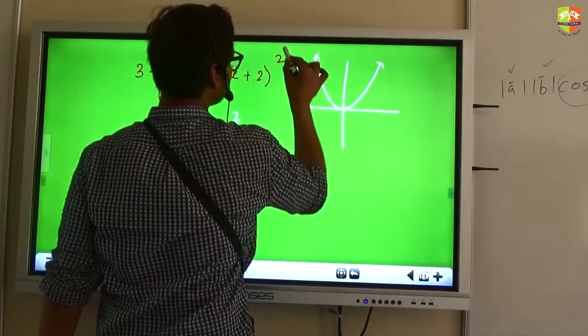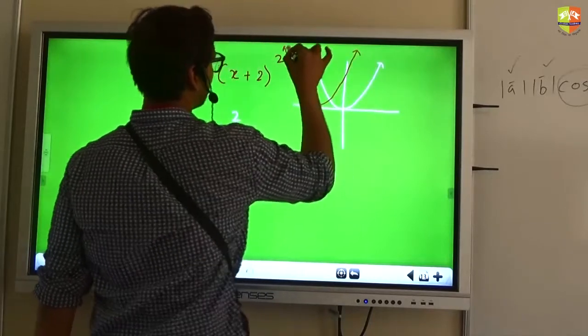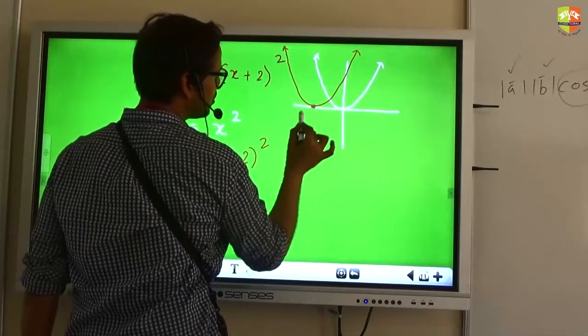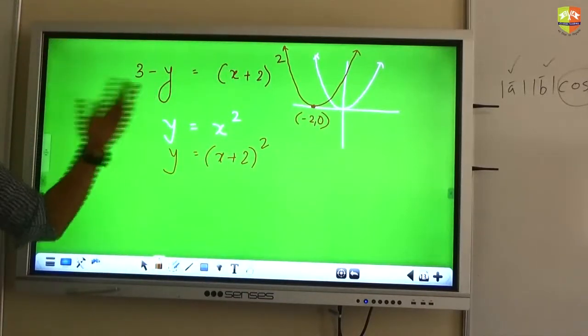What will be the position of the vertex now? Minus 2, 0. So the graph has moved to the left.